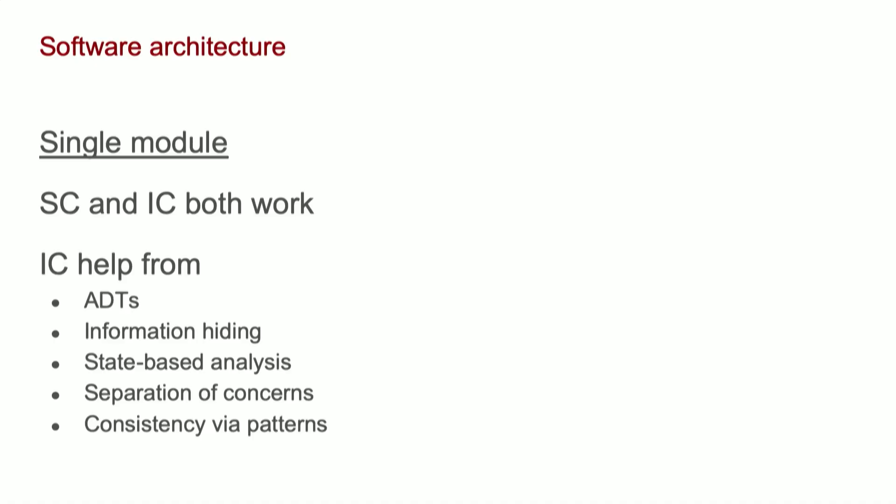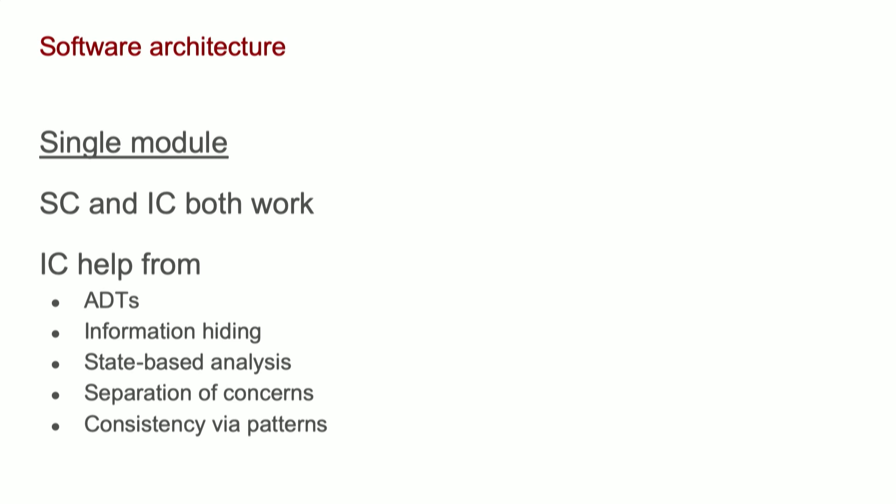We're here at a software architecture conference, so let's chat about how specifically this works with software architecture. For a single module — like a class file or another kind of unit of code — both statistical control and intellectual control work great. You can blanket it with tests, and it's small enough that that works pretty well. You can also use intellectual control: there's a great bag of software engineering techniques that include abstract data types, information hiding, structuring things as state machines that help you reason through that code.